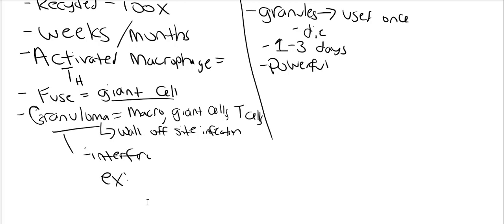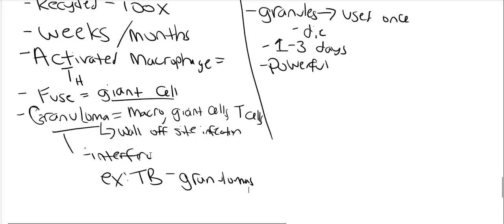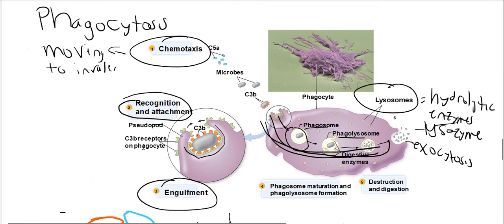For example, with tuberculosis infections, if there's enough mycobacterium in the lungs, a granuloma can form. If you look at a chest X-ray, you can see these granulomas forming in the lungs and they can interfere with normal tissue function. That is the process of phagocytosis and some of the differences between neutrophils and macrophages.